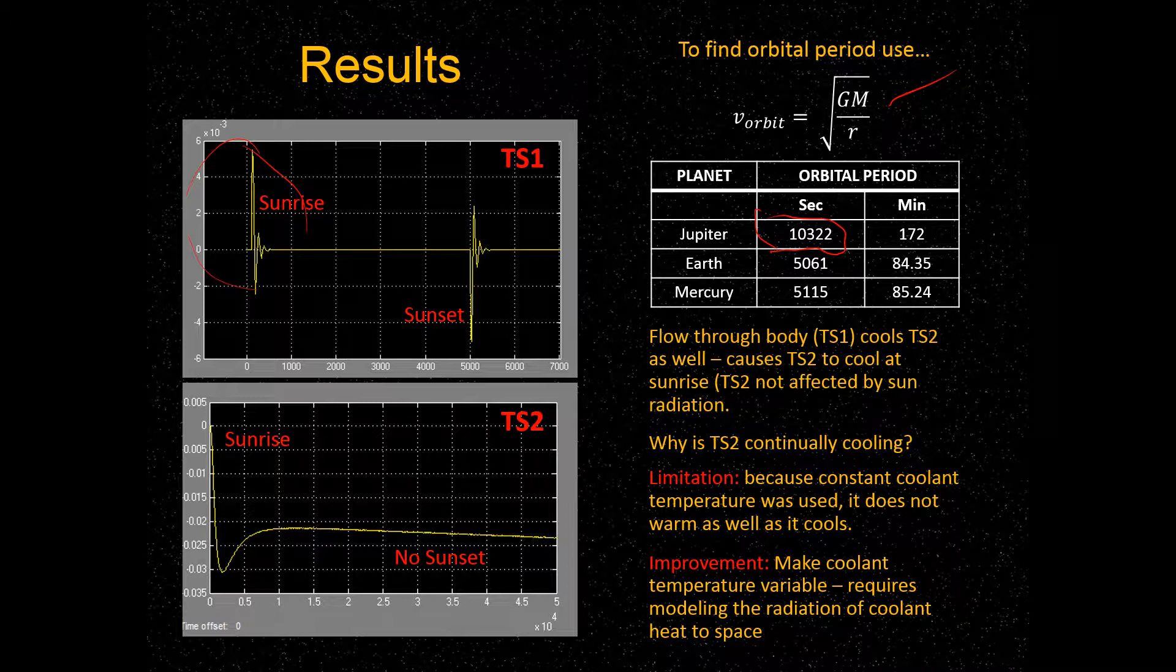As you can see, before about 400 seconds right here, we were able to return it to this set point. And it has similar behavior, but inverse when the sun sets. That's surface one on the top, and the second plot right here is surface two, so this is the surface that's near the engine.